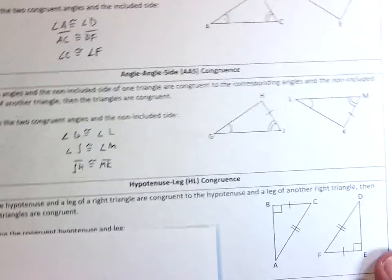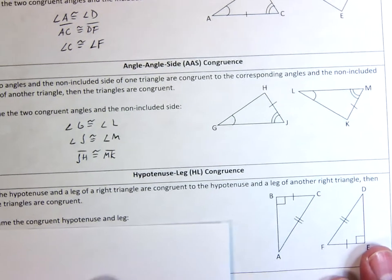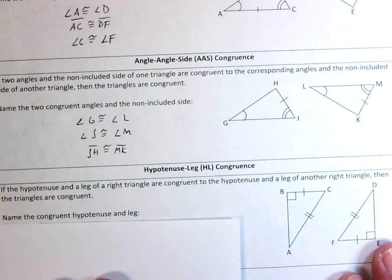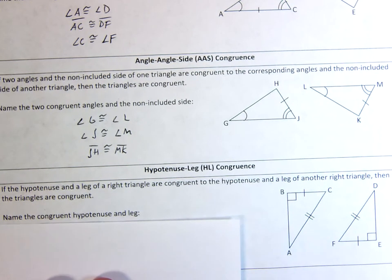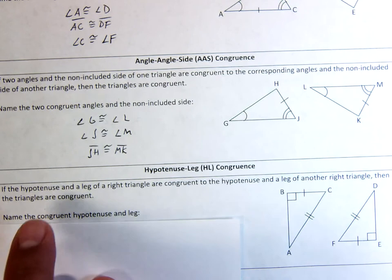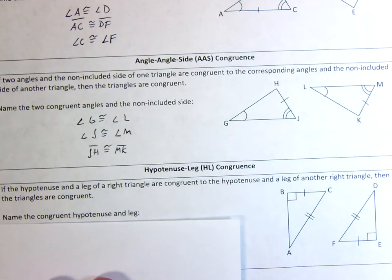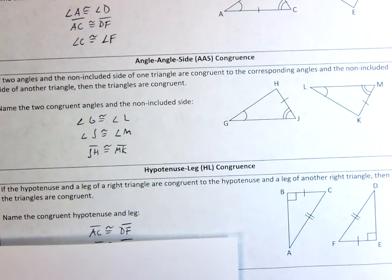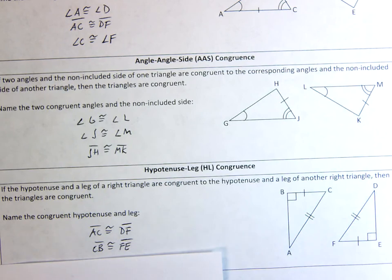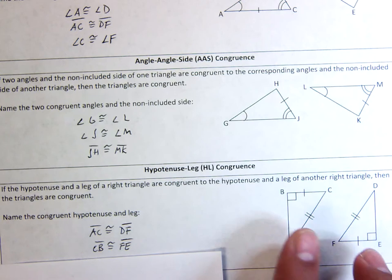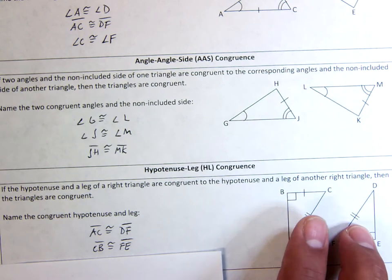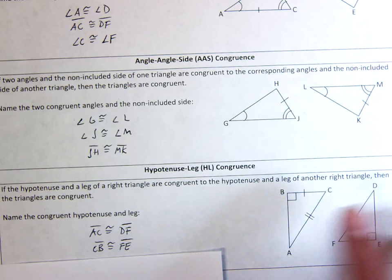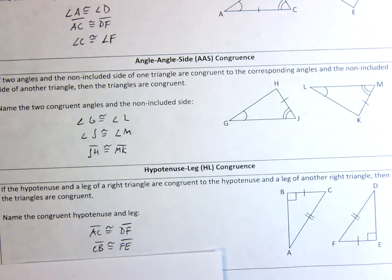The last one — most of you were able to make this triangle pretty easily. Hypotenuse-Leg: if it's got a hypotenuse, it's got to be a right triangle. The hypotenuse is always the side opposite the right angle. If the hypotenuse and the leg of a right triangle are congruent to the hypotenuse and leg of another right triangle, that is sufficient to say the triangles are congruent. AC is congruent to DF (two tick marks each) and CB is congruent to FE (one tick mark each), so these hypotenuses match, these legs match, and my triangles are congruent.